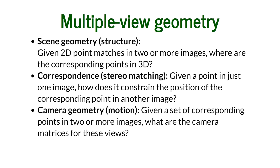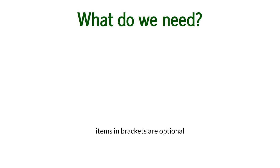The third question is about camera geometry — the question of motion. If we have a set of corresponding points in two or more images, the question is: what were the camera matrices? Where was the camera while it was taking these views, and what were the parameters of the camera?